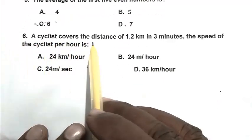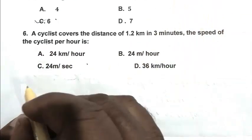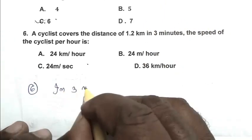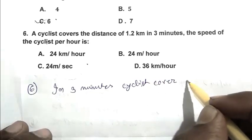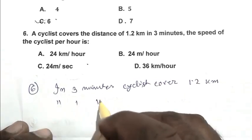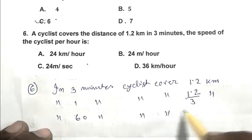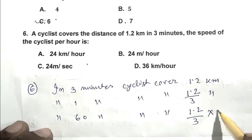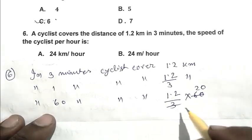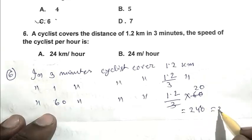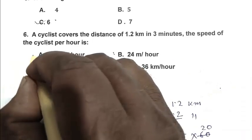Question number 6: A cyclist covers a distance of 1.2 kilometers in 3 minutes. The speed of the cyclist per hour is. In 1 minute, the cyclist covers 1.2/3 kilometers. In 60 minutes, the cyclist covers 1.2/3 × 60 = 24 kilometers. So the speed is 24 kilometers per hour, and A is the right answer.